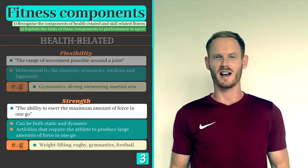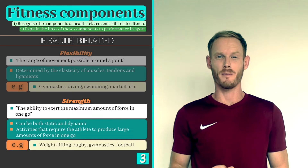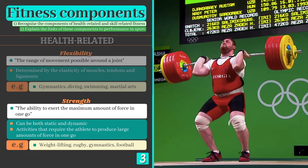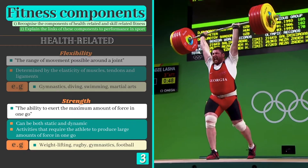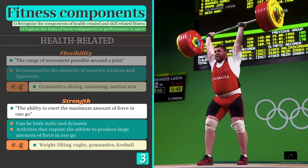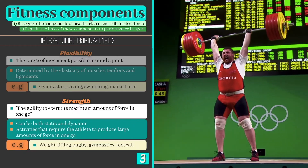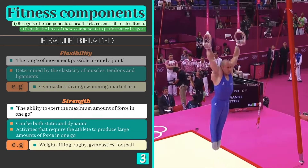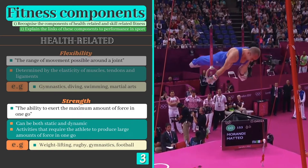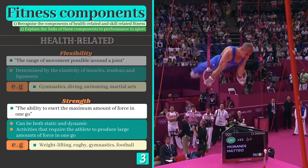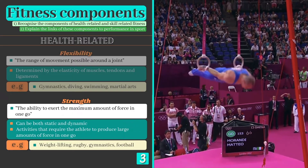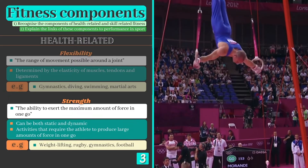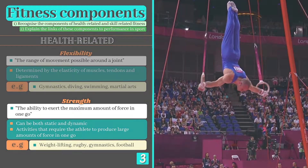Next we have strength, which is the ability to exert the maximum amount of force in one go. Static strength involves isometric muscular contractions and can be seen when scrummaging in rugby or holding the barbell during an Olympic lift. Dynamic strength on the other hand involves isotonic contractions and is required by gymnasts performing a ring routine or when a striker attempts to hold off their marker in football.